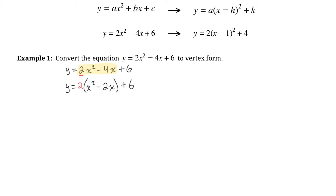Next we look at our new b value — the coefficient in front of x after factoring out a. Since we factored out the a value, that coefficient has changed. Our new b value is negative 2. We take that b value, divide it by 2, and then square it. Negative 2 divided by 2 gives negative 1, and negative 1 squared is positive 1.